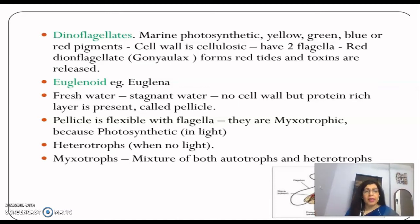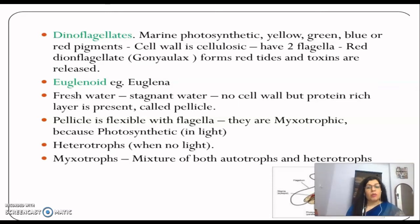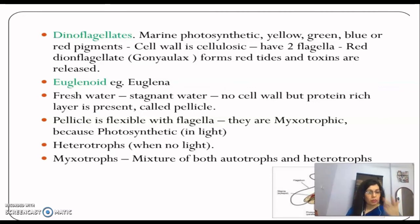Next we move on to euglenoids. The example is Euglena, and these are fresh water organisms. Instead of a cell wall, they have a protein-rich layer called a pellicle, which makes their body flexible. They are mixotrophic: when light is present they are photosynthetic, and when light is absent they become heterotrophic, taking nutrition from other organisms.